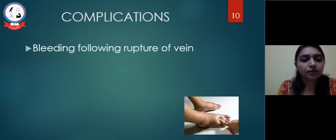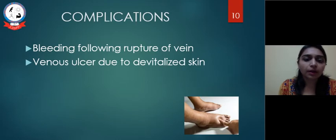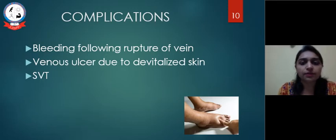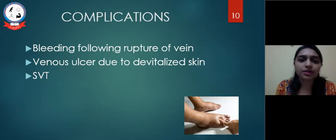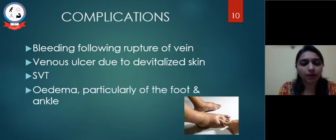Complications: Bleeding from a ruptured vein can occur. Venous ulcer develops due to devitalized skin where any friction can lead to ulceration easily. Superficial venous thrombosis (SVT) may develop due to venous stasis from varicosity. Edema, particularly of the foot and ankle, is also a complication.